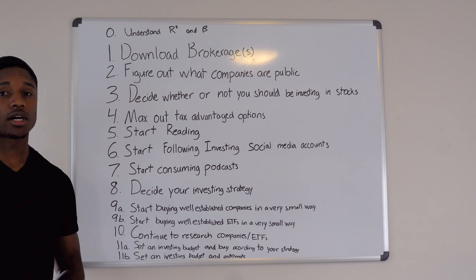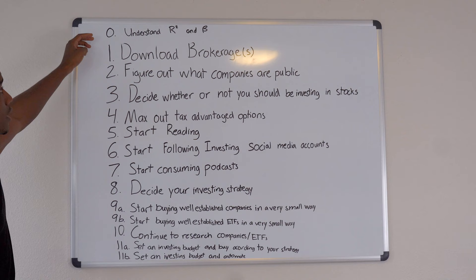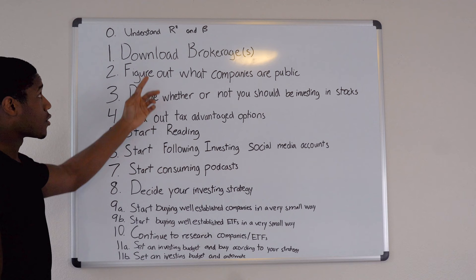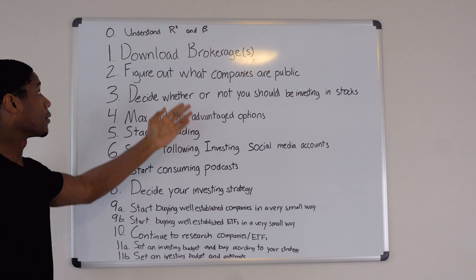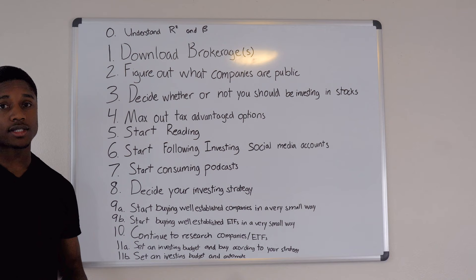We've got basically 14 steps here. Number zero — I had to add this in after because it was actually huge — is understanding R-squared and beta. R-squared is your correlation coefficient; it tells you how that stock is behaving relative to the market and how correlated it is with the market.